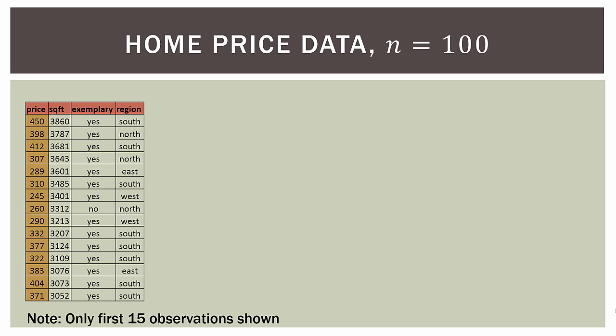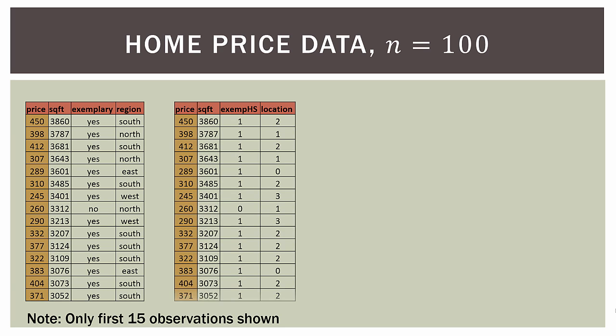The first thing we're going to do is some recoding — we're going to change our text entries such as yes, no, north, south, east, or west into numerical values. For exemplary high school, if it's a yes we code that as 1; if it's a no we code that as 0. For location, I'm going to code these in alphabetical order to make Minitab happy, which I'll talk about later. So east is the first alphabetical region and gets a code of 0, north is a code of 1, south is a code of 2, and west is a code of 3.